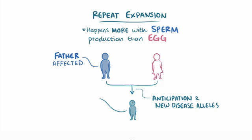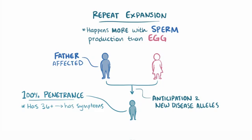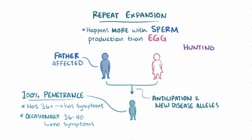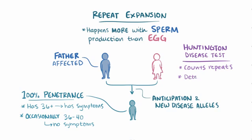HD has basically 100% penetrance, meaning that if a person has 36 or more repeats, they have the disease, although occasionally people with 36–40 repeats don't have any symptoms. Because of this penetrance, the test for HD — which counts the number of CAG repeats — is really good at determining whether Huntington disease will develop in an at-risk individual.